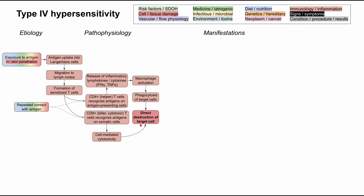CD8+ and CD4+ T cells both end in direct destruction of the target cell, all triggered by exposure to an antigen. That exposure can happen through a number of different means: it can be environmental, a toxin, a prescribed medicine, a microbial infection, part of their diet, or an autoimmune process inside their body.